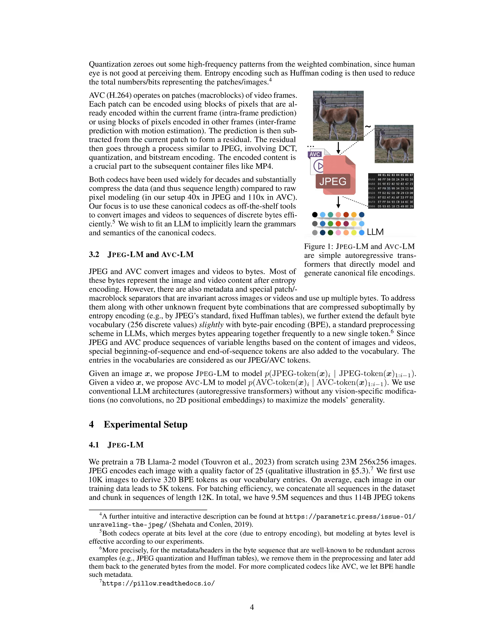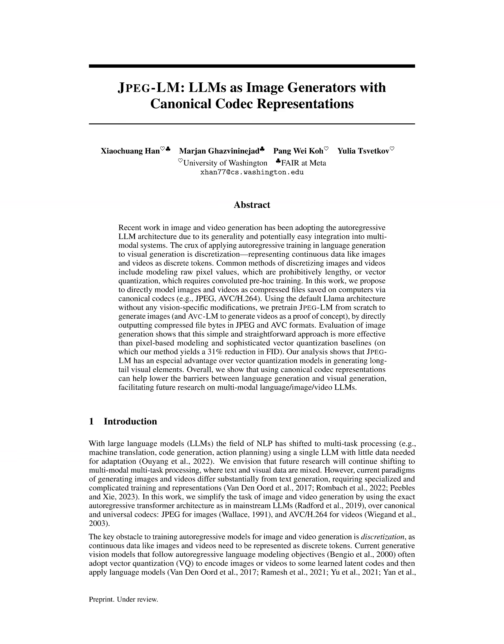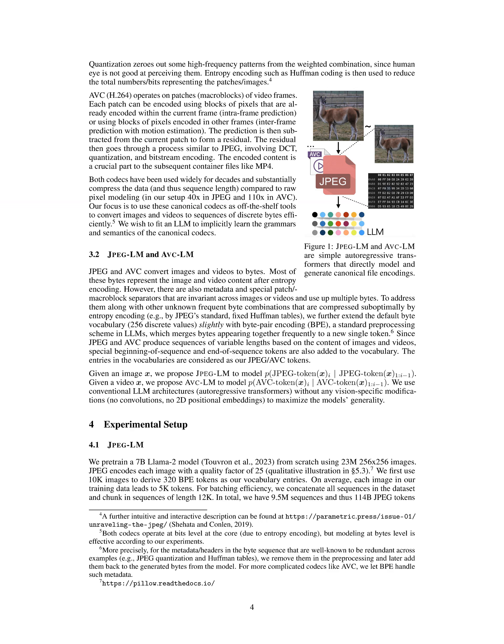The proposed method utilizes canonical codecs — specifically JPEG for images and AVC H.264 for videos — to simplify the autoregressive generation process in LLMs. During the encoding process, images are converted into a discrete 1D representation using JPEG, which involves three main steps: discrete cosine transform (DCT) to convert image patches, quantization to remove less perceptible high-frequency patterns, and entropy coding to compress the data further.